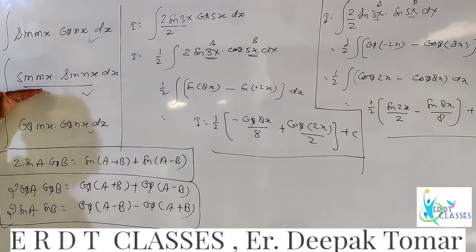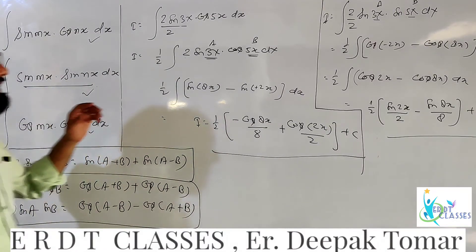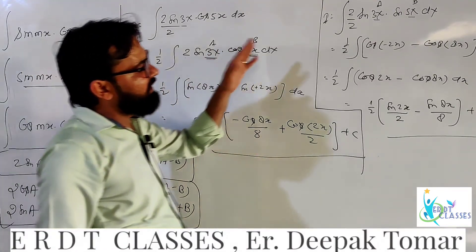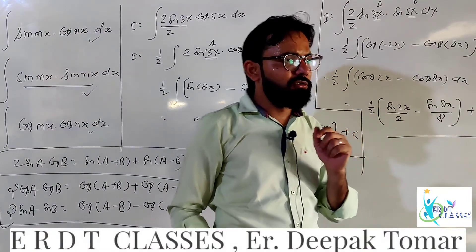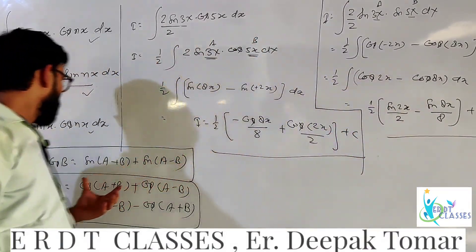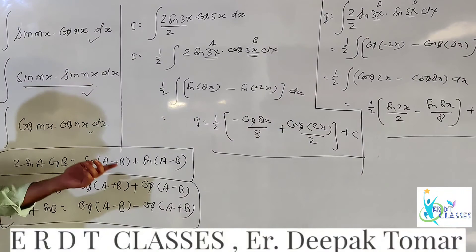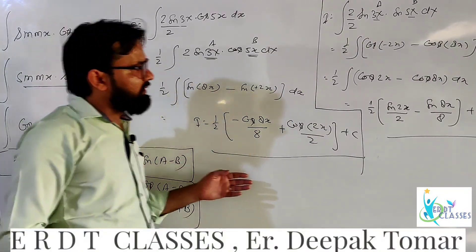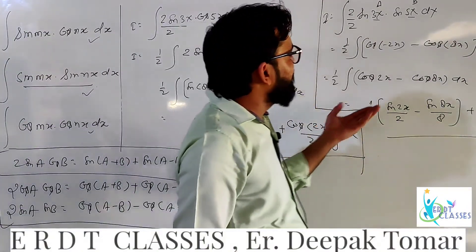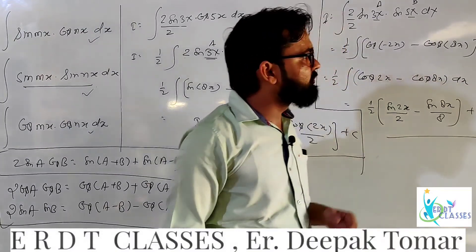For the cos A cos B case, similarly divide by 2, multiply by 2, then use the 2 cos A cos B formula and convert to sum or difference form to integrate.